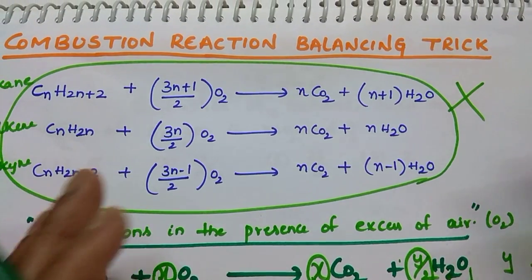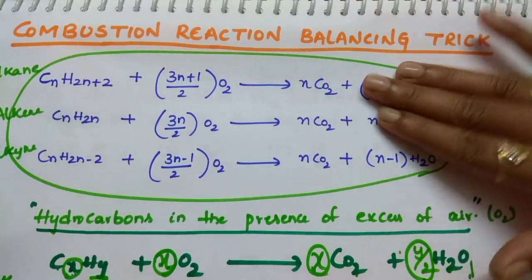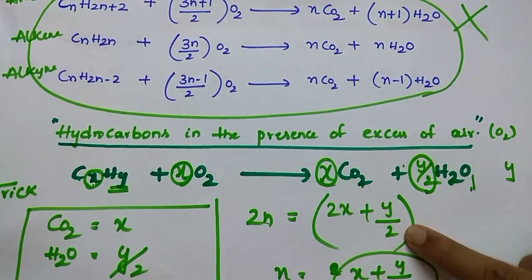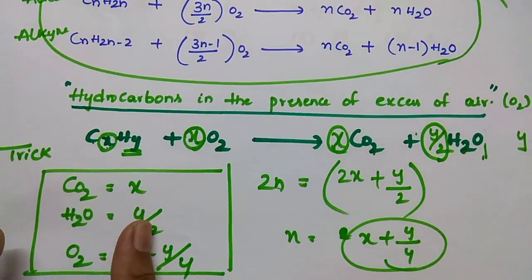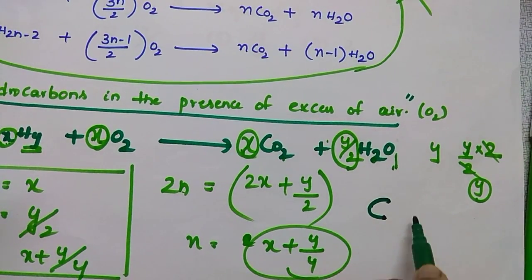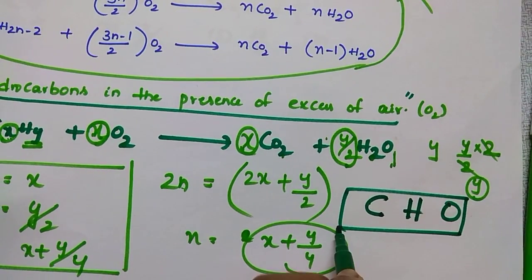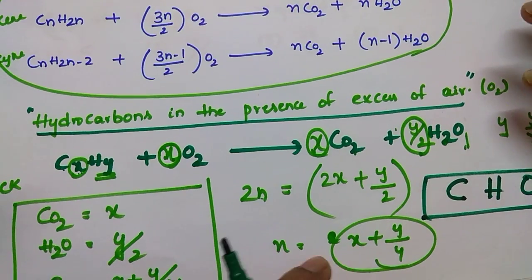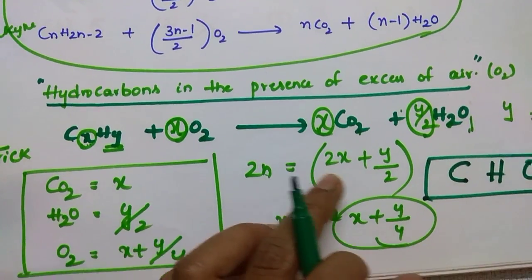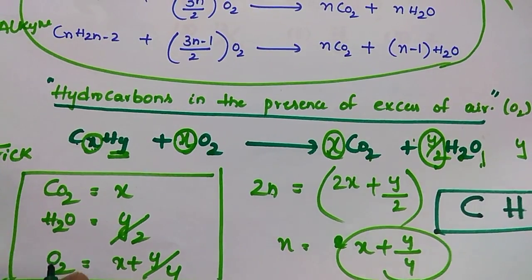Suppose if you want to balance directly without using any of the formulas, if you don't want to use any formula, directly if you want to balance by using hit and trial method: first balance carbon, then hydrogens, then oxygen. This is the order you have to follow.